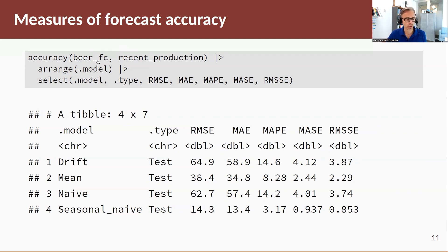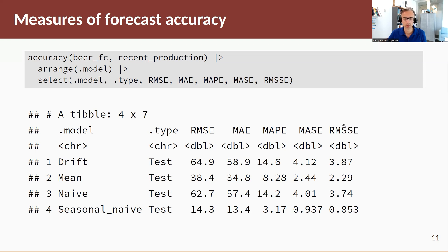The more useful way to use the accuracy measure is to look at forecast accuracy over the test set. In this case, we need to pass two things to the accuracy function: the Fable containing our forecasts, and the whole data set, because MASE needs the in-sample data to calculate the scaling factor. Selecting the measures of interest, down the rows we have the methods and across the columns the error measures. Clearly the seasonal naive does best out of sample as well, as expected with seasonal data.